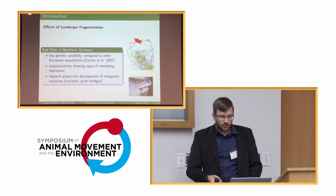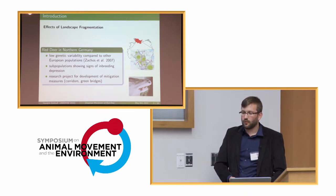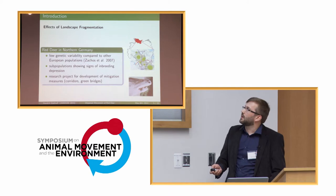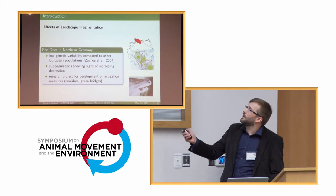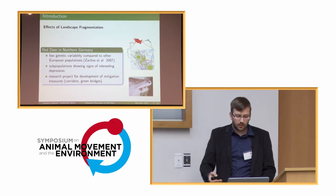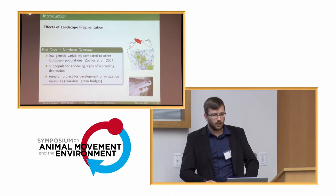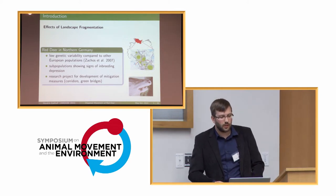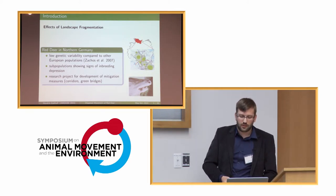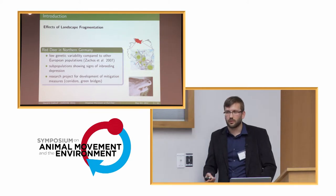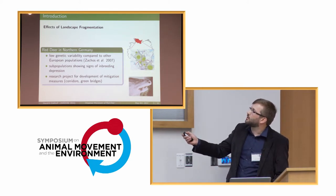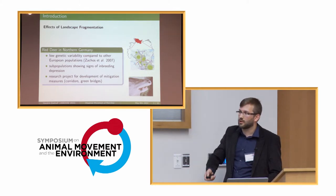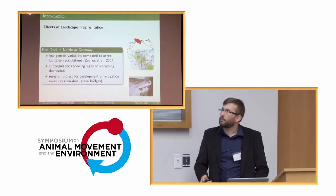The species I'm looking at is red deer in northern Germany — one of the largest free-roaming mammals in Germany. In this area of northern Germany, due to landscape fragmentation, the population is split up into eight subpopulations with poorly existing connectivity between them. This is also detected by genetic variability, which is quite low compared to other European populations, and some subpopulations already show signs of inbreeding, indicated by shortened lower jaws.